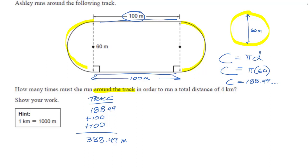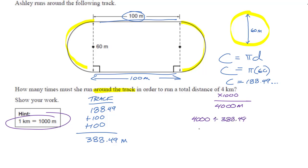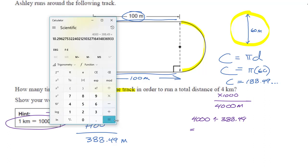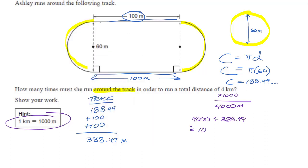She wants to run 4 kilometers, which is 4000 meters. Dividing 4000 by 388.49 gives approximately 10.3 laps — just over 10 full times around the track.